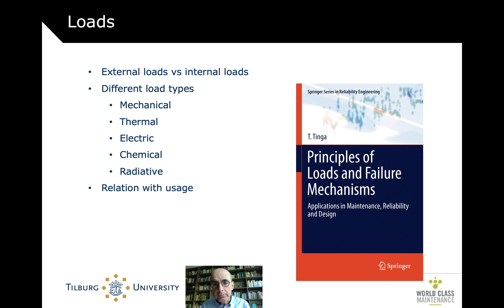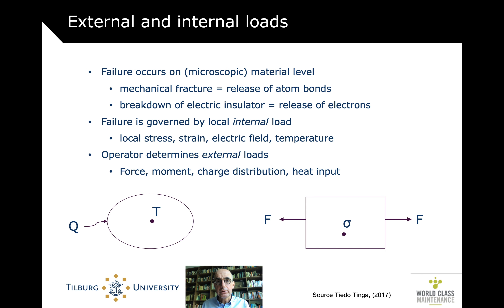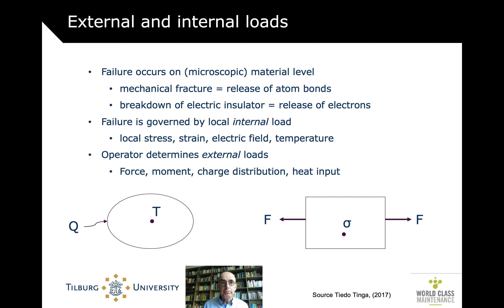For physicists, what's really happening at the microscopical material level is the release of atoms and electrons as a result of fractures. Failure is governed by an internal load — the local stress. Because of the usage of the material, an external load is generated. The external load — force, moment, etc. — leads to a local stress or strain. That's the whole logic of it: usage leads indirectly through local loads, which then create damage accumulation.